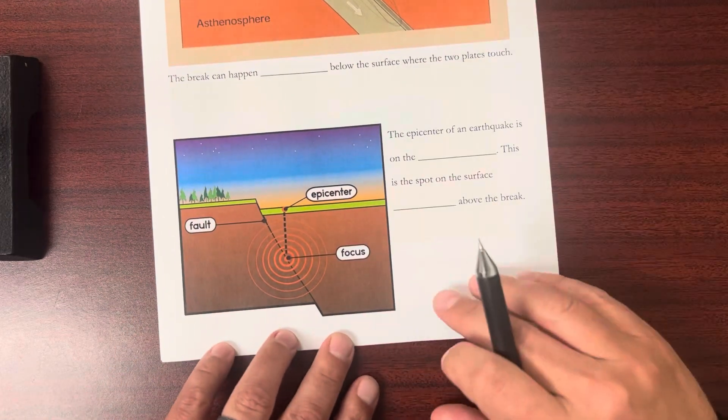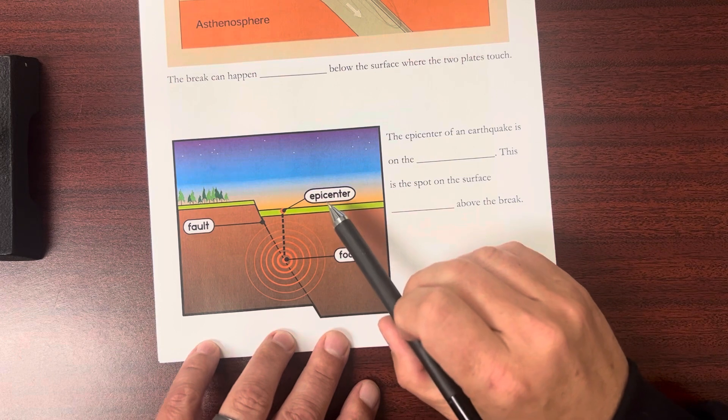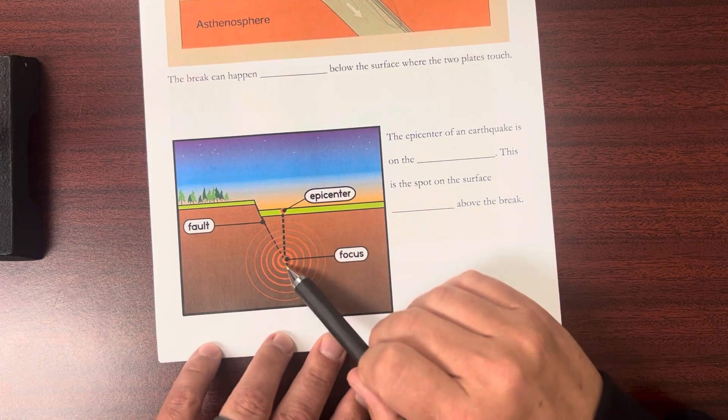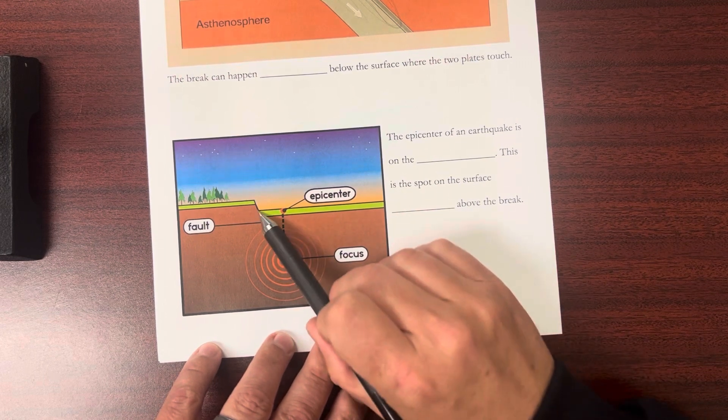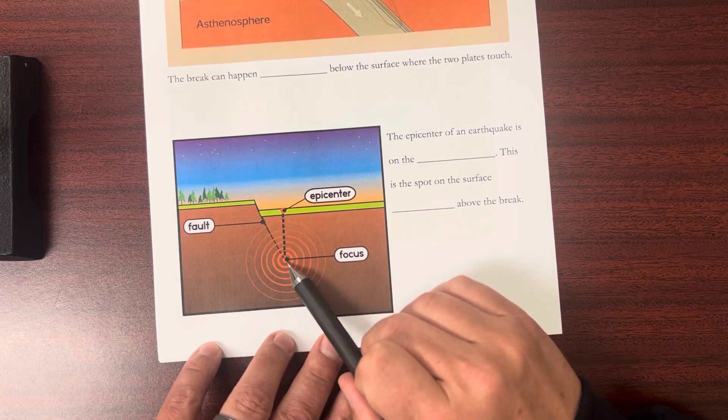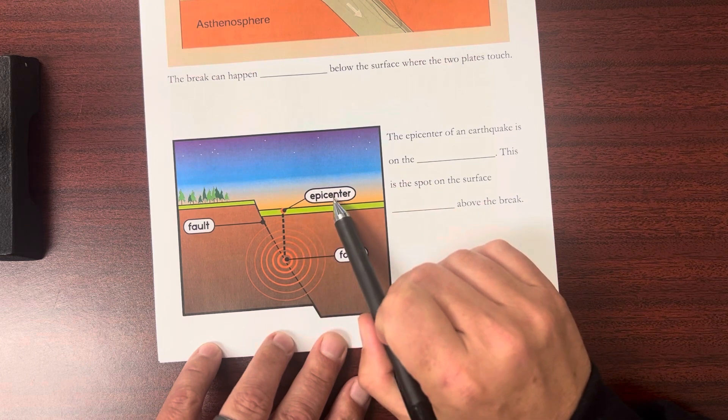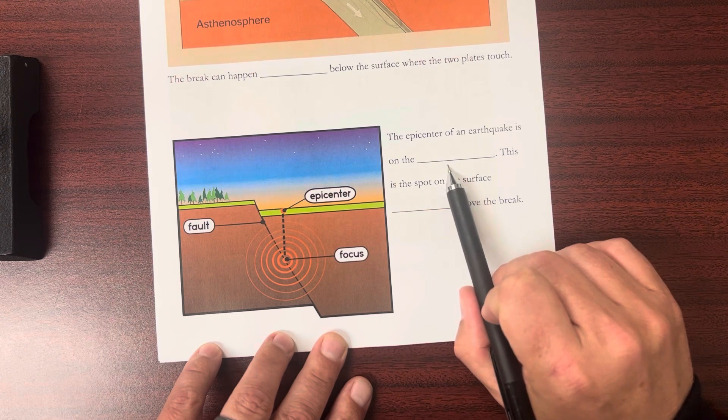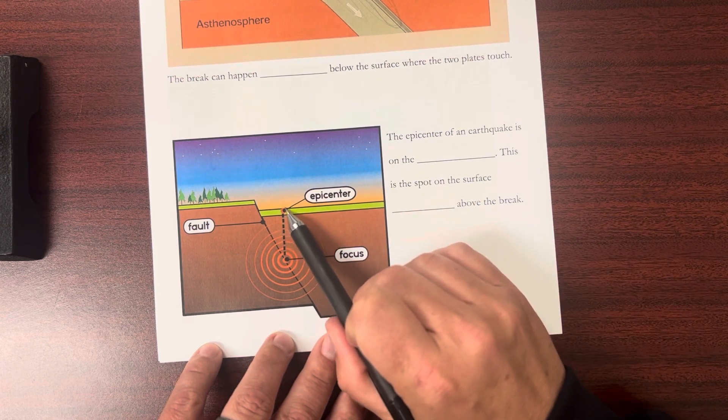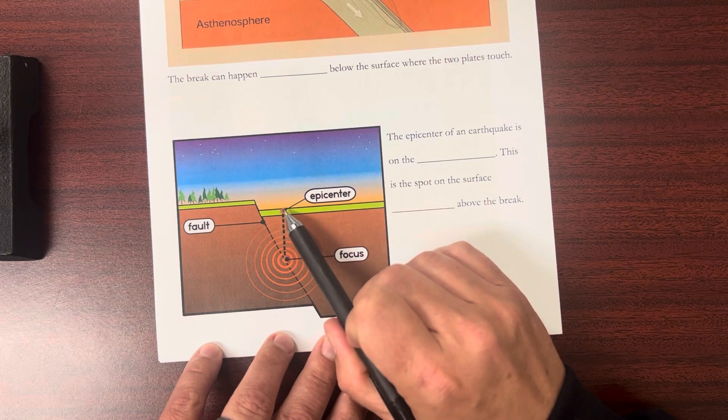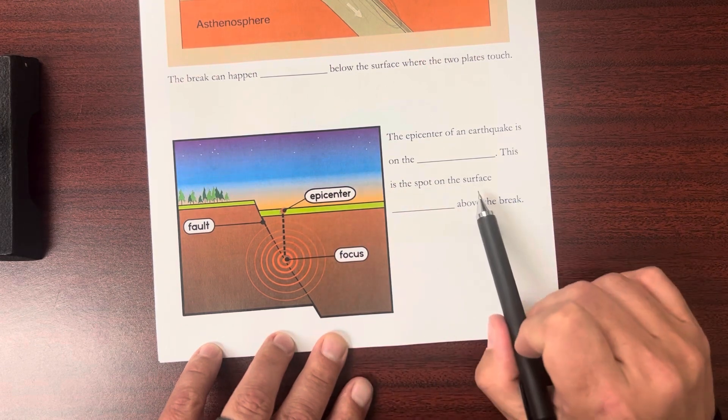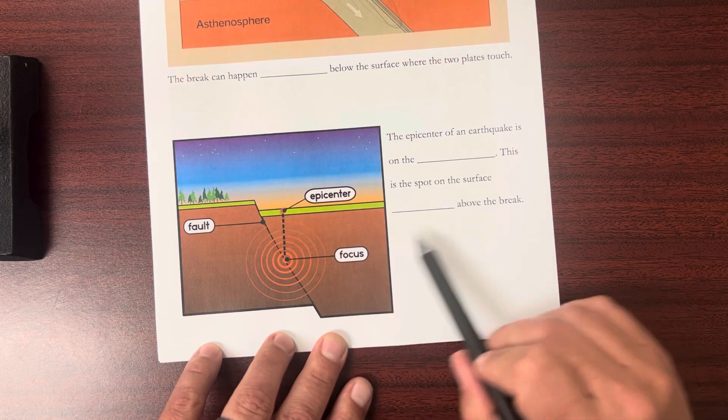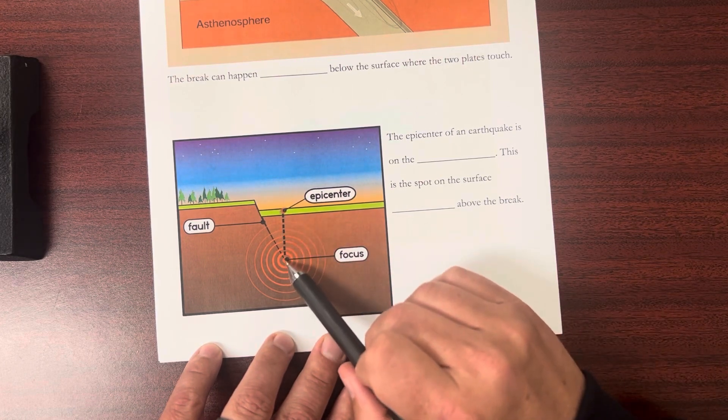Now a little bit of terminology and vocabulary. We've talked about, or you might have heard about, the epicenter of an earthquake. And you see that the earthquake is actually below the surface. It's not at the surface. It's below the surface. But the epicenter of an earthquake is on the surface. We always talk about the epicenter as where we see it on the surface here. This is the spot on the surface that is directly above the break. So it's directly above where that break actually happened.